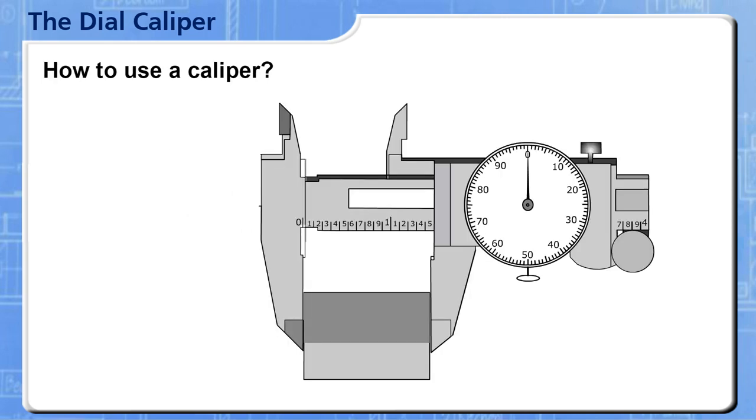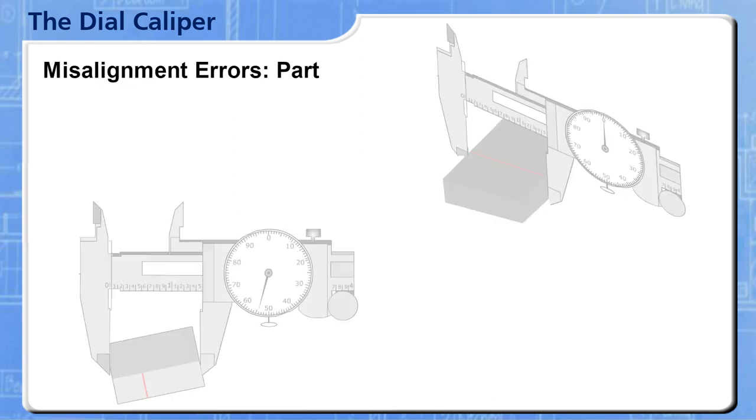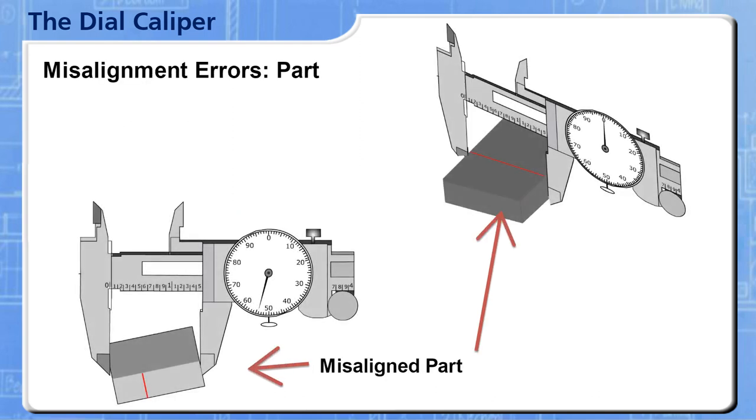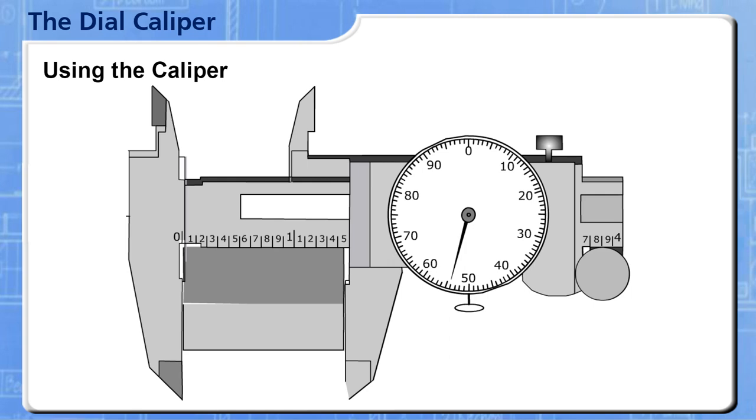Misalignment errors often occur when people measure at the bottom of the jaws because this line of measurement is so far away from the scale standard. These errors can be misalignment of the caliper on the part or misalignment due to play in the jaw. To minimize these errors, measure as close to the beam as possible.